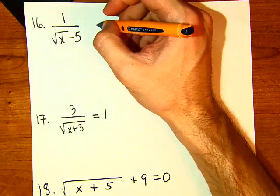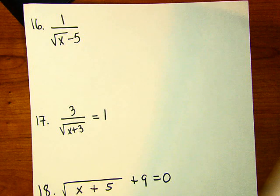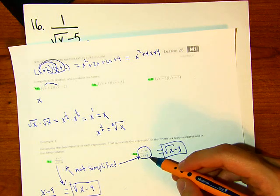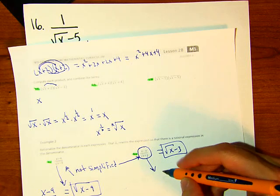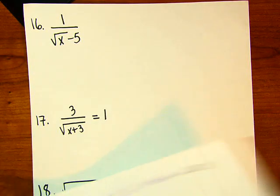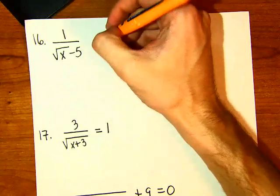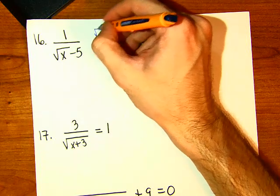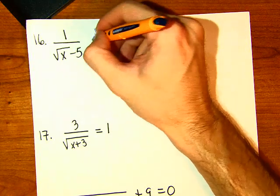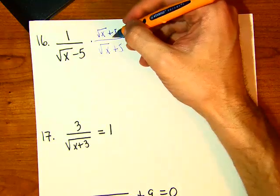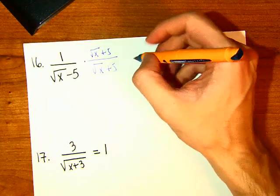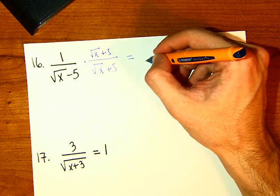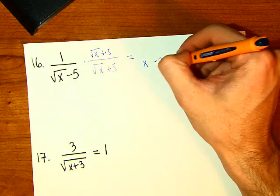For this one we have square root of x plus 3, and the idea is to multiply by the conjugate. The conjugate of square root of x minus 5 would be square root of x plus 5. We need to multiply the top and the bottom by square root of x plus 5. Multiplying this out gives x minus 25 in the denominator.